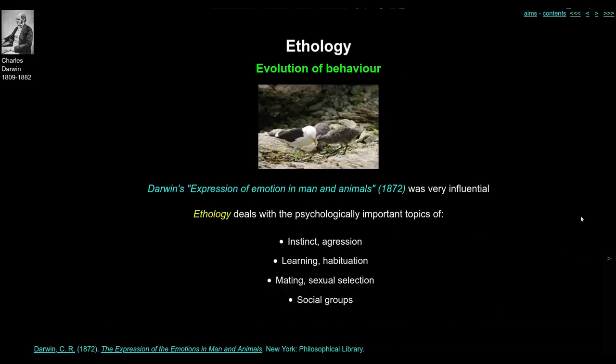One of the direct descendants from evolutionary theory was ethology — essentially the evolution of behaviour: how have animals' behaviour come to be adapted and changed by environmental considerations? Darwin himself started talking about humans, emotions, and behaviour in his book Expression of Emotion in Man and Animals, which was very influential for the ethologists. The subject of ethology deals with the psychologically important topics of instinct, habits, aggression, learning, habituation, mating and sexual selection, and social groups. We're going to look at three of the main early ethologists.